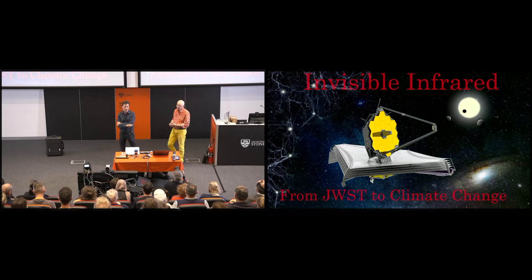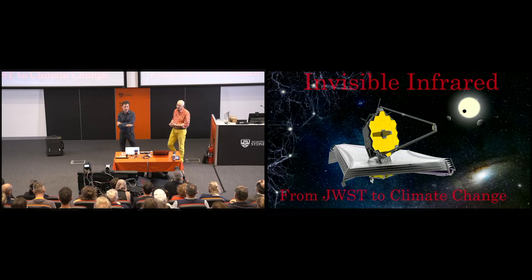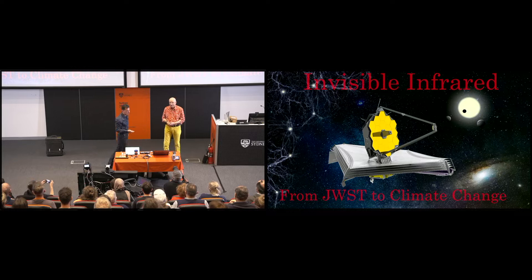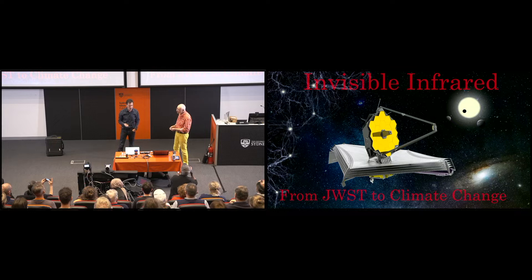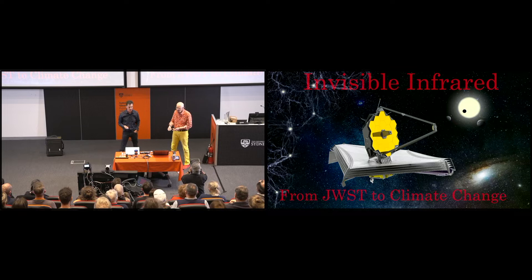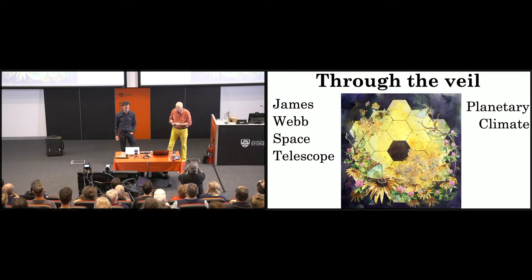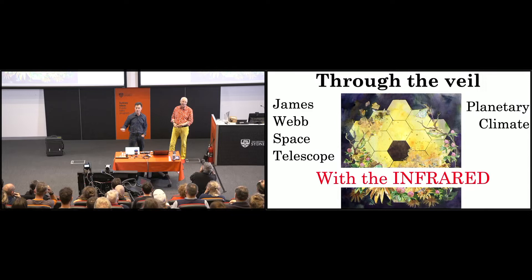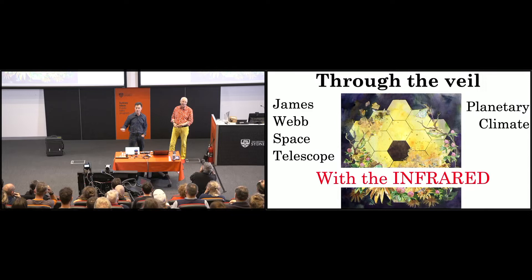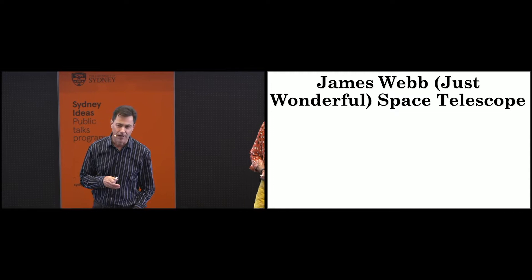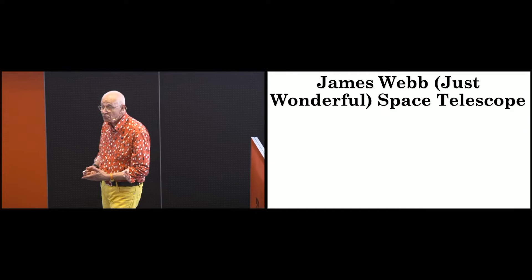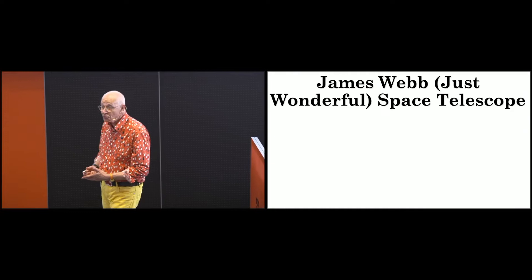We're here to talk about the most amazing big thing happening in astronomy today, and that's the James Webb Space Telescope. JW stands for Just Wonderful. This has got a huge mirror, six and a half metres across. You can see this amazing shield underneath. We'll talk more about that later. And we've got a quandary: How do we go from a telescope to climate change?